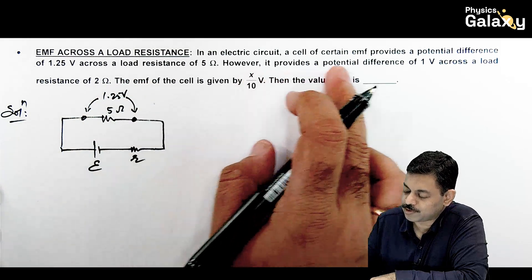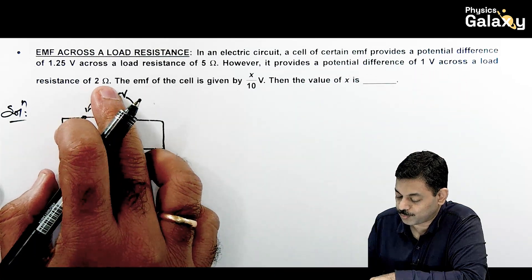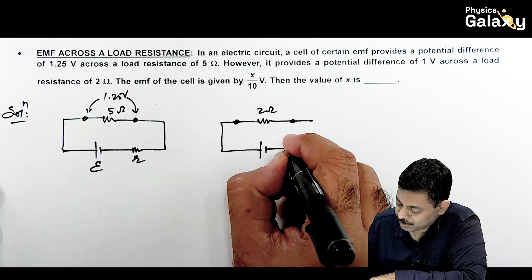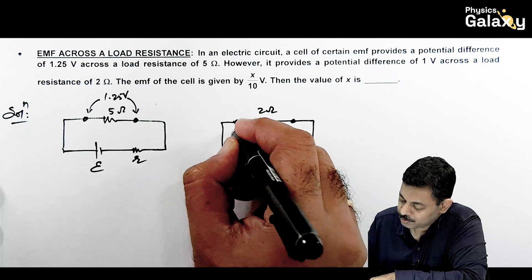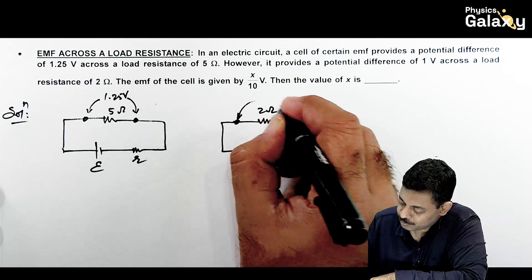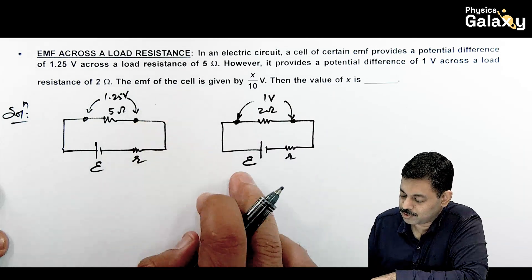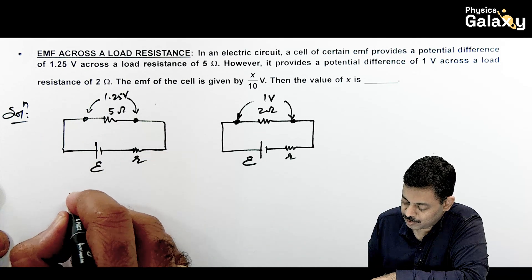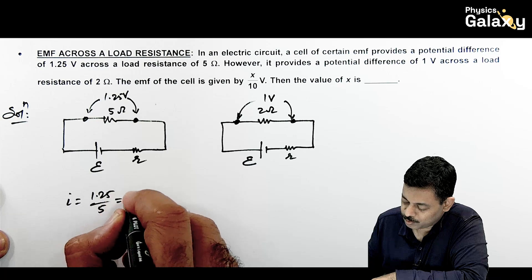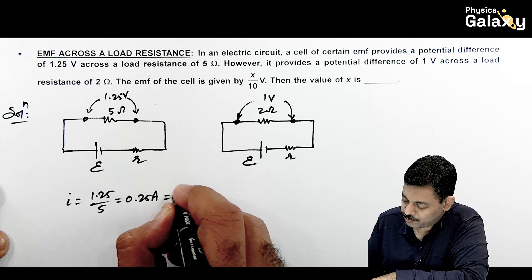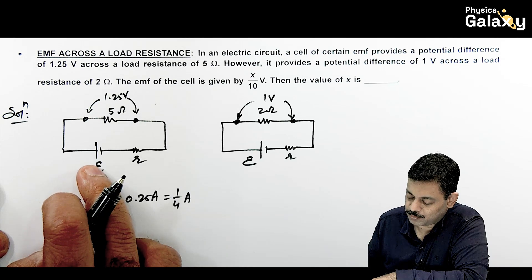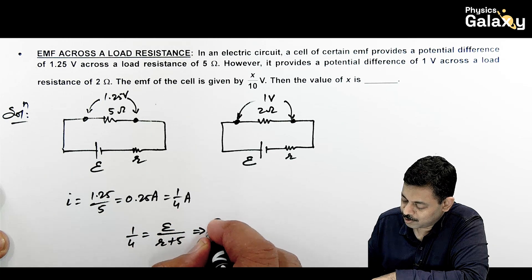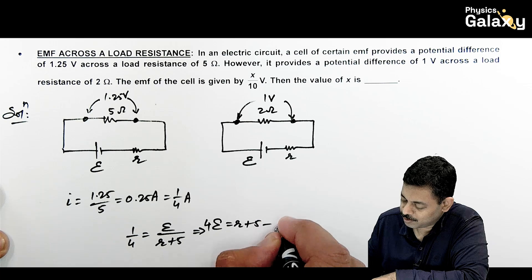Further, the cell provides a potential difference of 1 volt across a load of 2 ohm. For the first condition, current = 1.25/5 = 0.25 A = 1/4 A. So e/(r + 5) = 1/4, giving the first equation: 4e = r + 5.